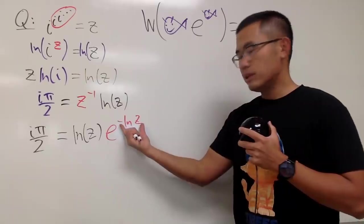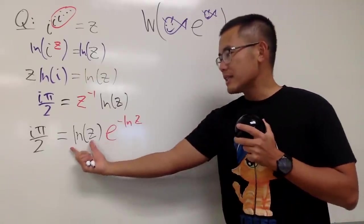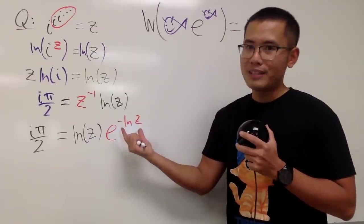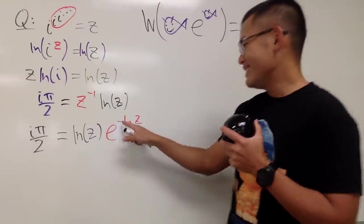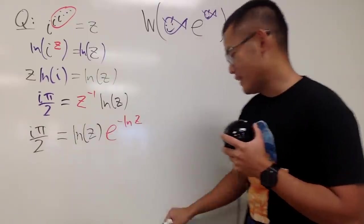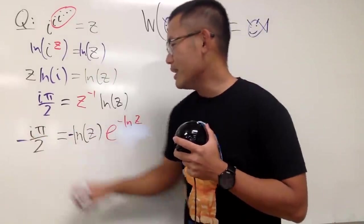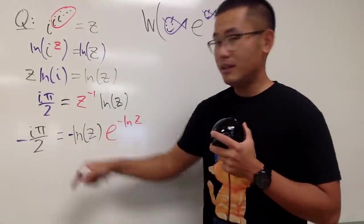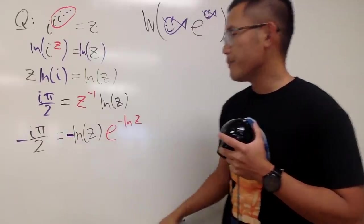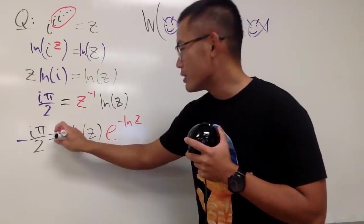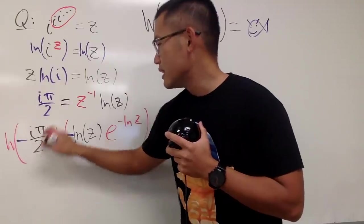Here is the fish. But the problem is: is this the same fish as that? Not quite — the only difference is the negative sign, so it's just a small change. Let's multiply both sides by negative. Once we have this, we can take the Lambert W function on both sides.